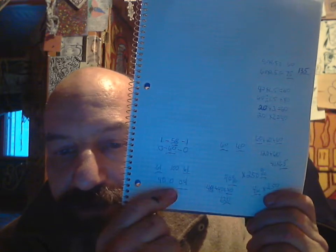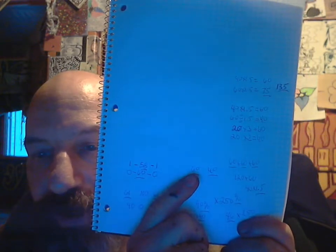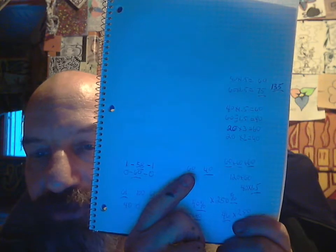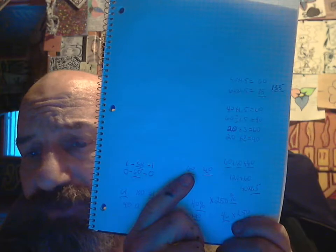40 times 1 and 1 half equals to 60. 20 times 3, 2 times 2, is your 40 and 60. 1 and 1 half times 2 is 3. 1 and 1 half times 2 is 3.